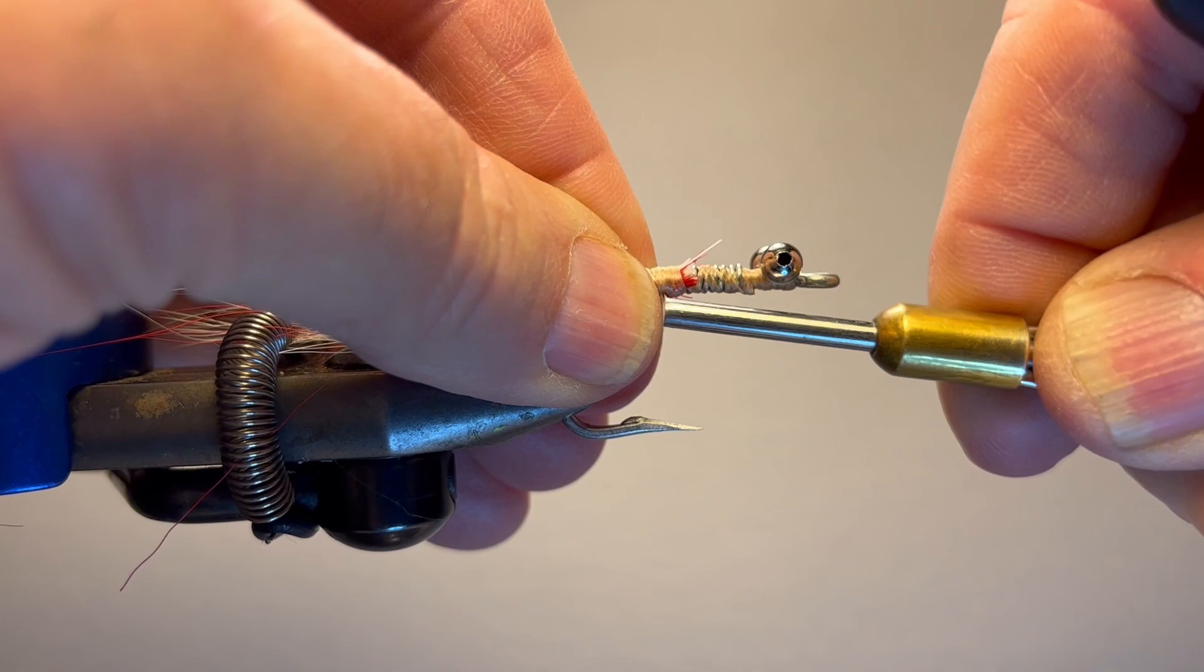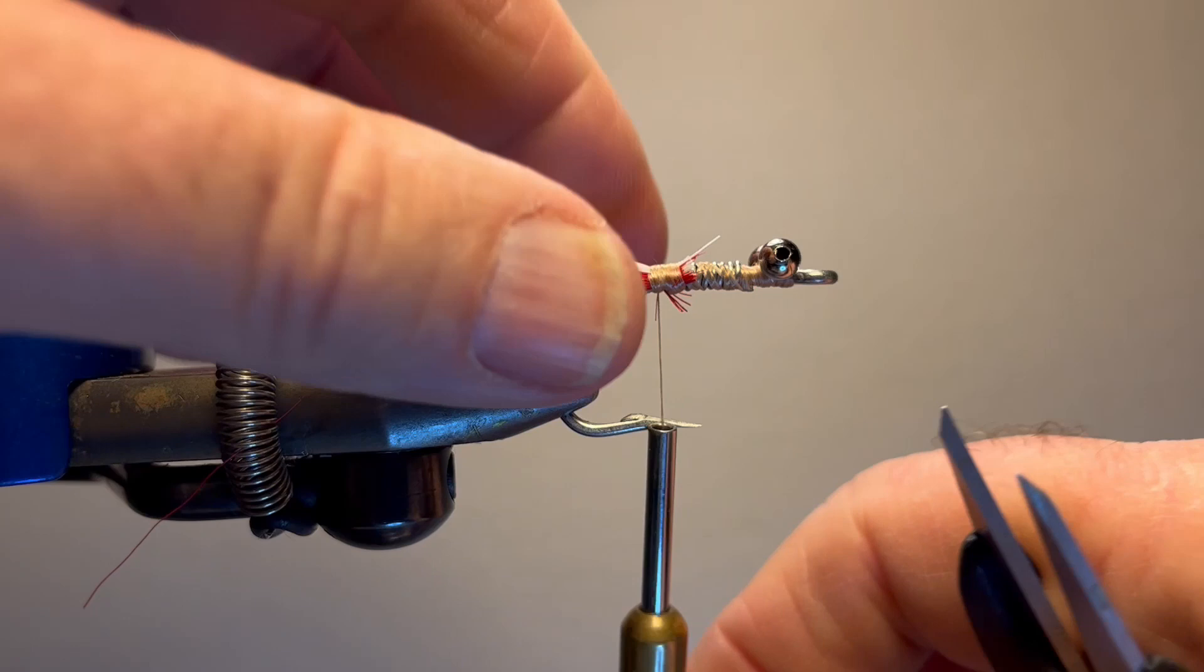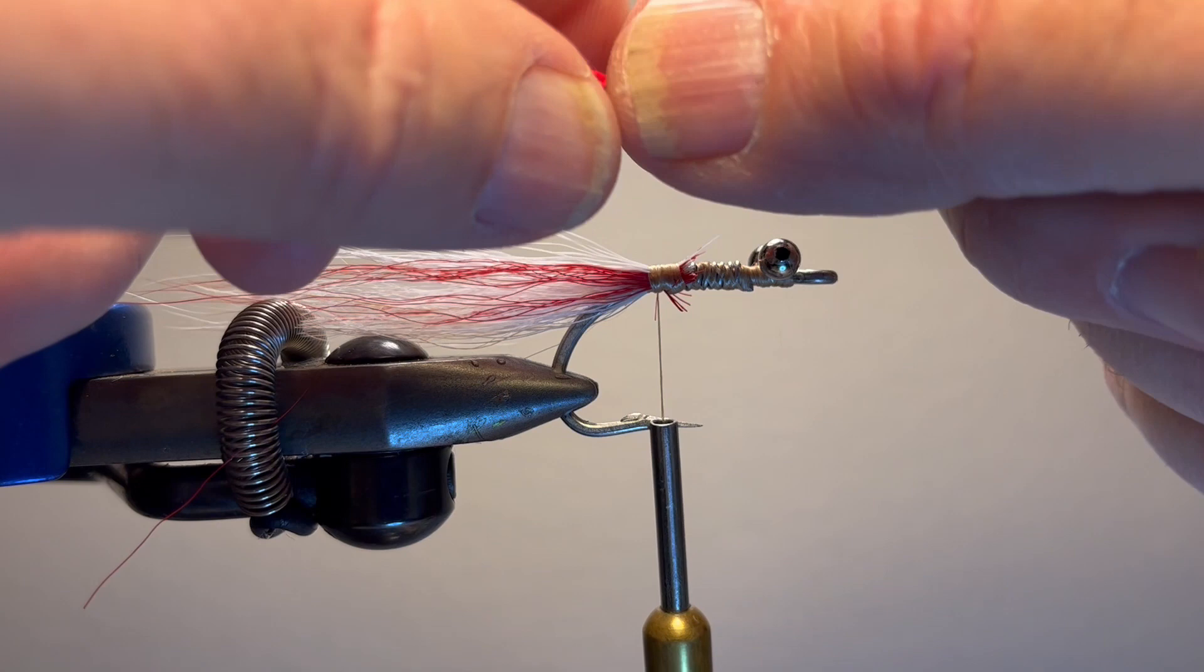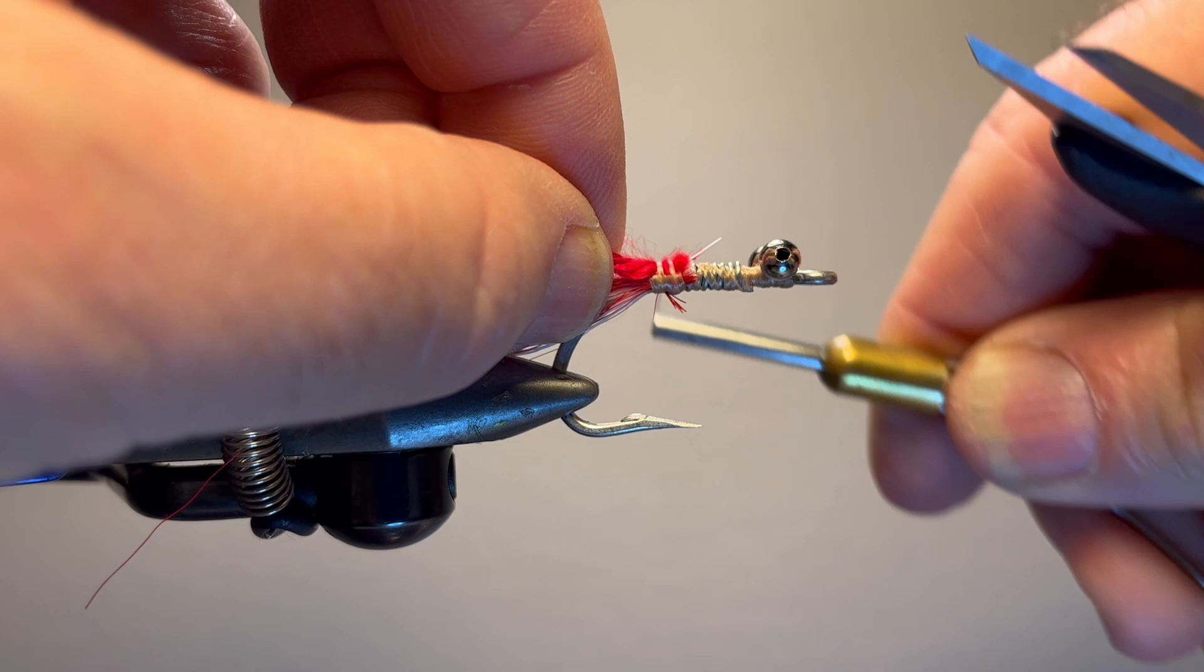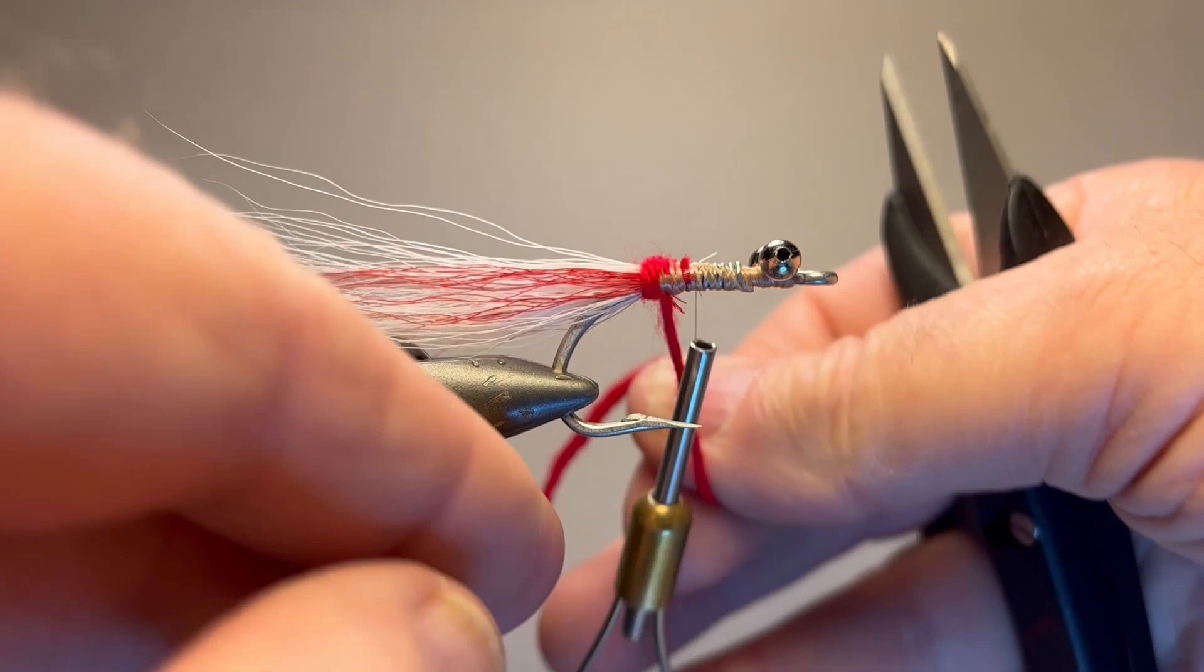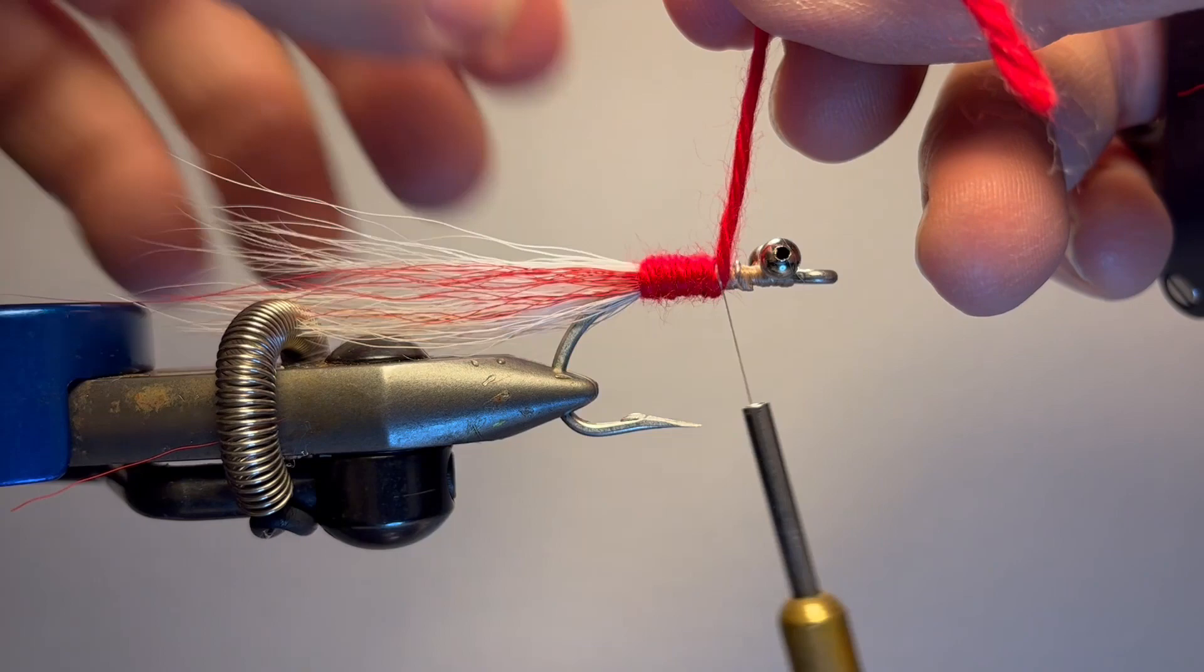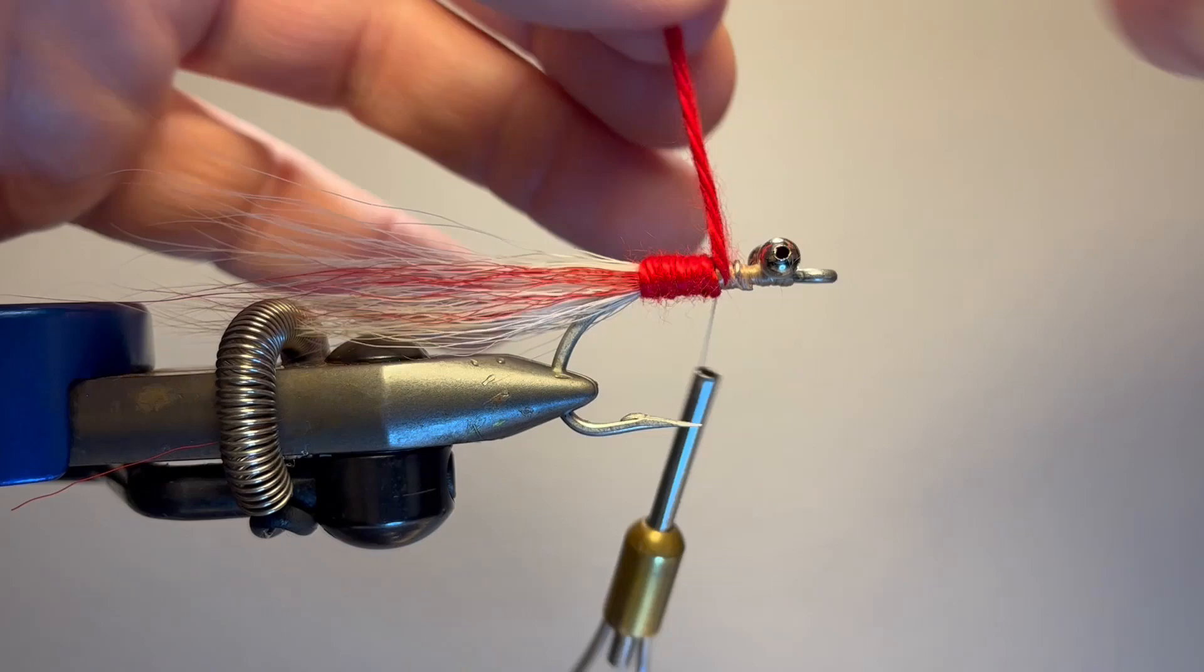I'm going to take a piece of red yarn. Just tie it in like this and advance my thread forward. And tie it off just like that.